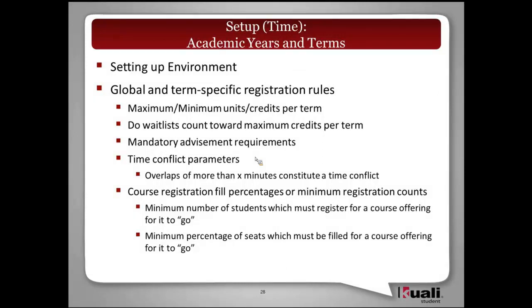Next I want to talk about setting up the registration environment — really getting it ready for students to be able to register. There are both global and term-specific rules. Some examples include setting the maximum or minimum credits per term, which might vary across different phases of registration. You might have a maximum for the first phase and a different maximum for the second phase, as well as the ability to set up whether wait lists count toward those maximum credits, mandatory advisement requirements, and time conflict parameters — since some institutions have rules about overlapping courses while others do not.